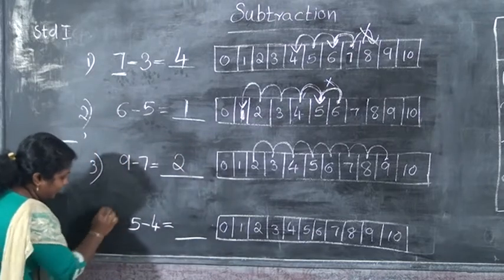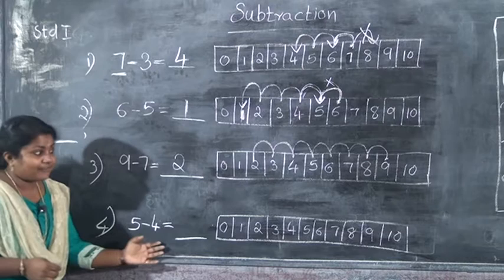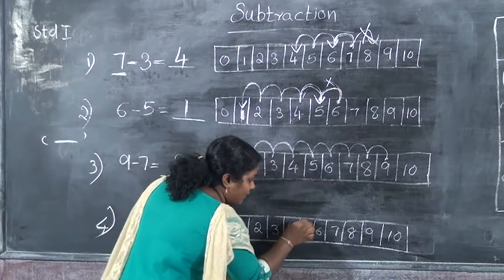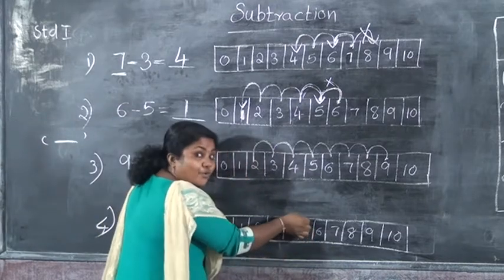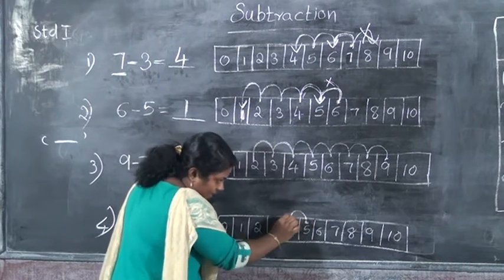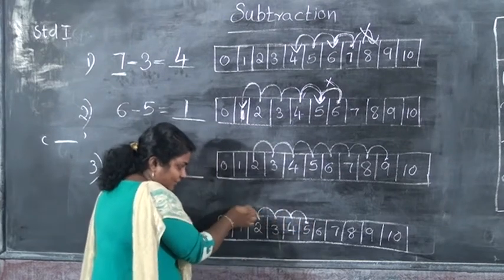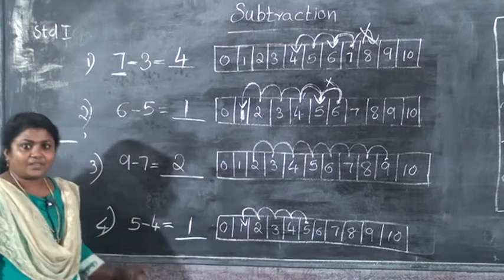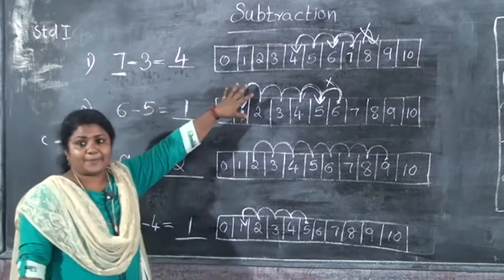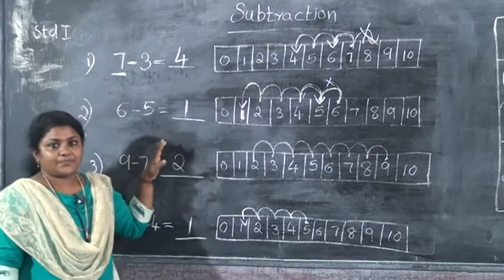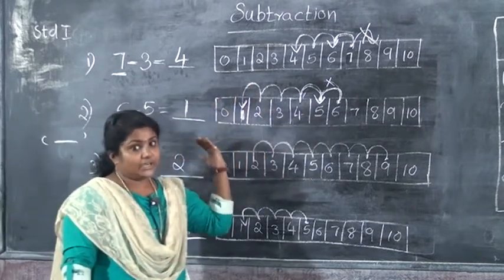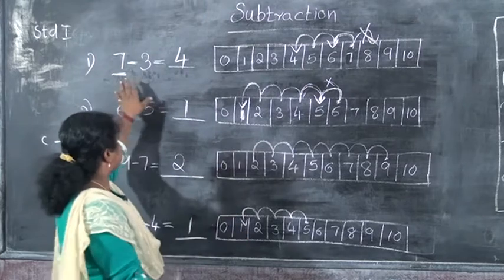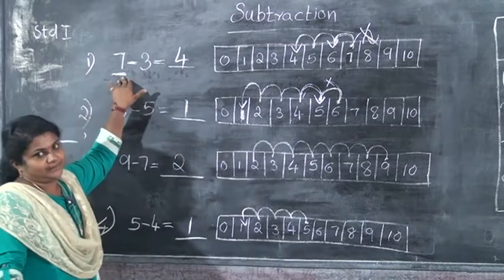The fourth question: 5 minus 4. We have to put a dot on 5 and take 4 backward jumps: 1, 2, 3, 4. The answer is 1. Have you all understood how to do subtraction using the number strip? We have to jump backward, starting from the big number.